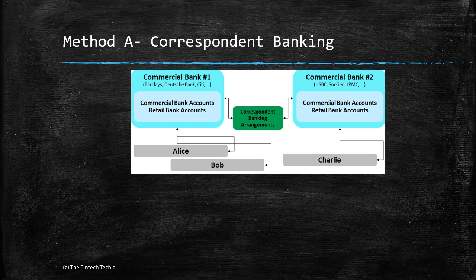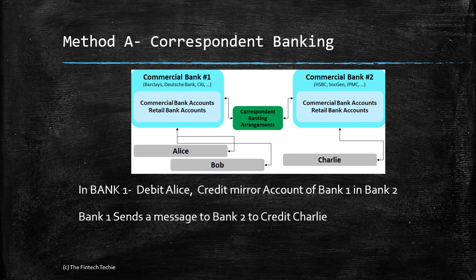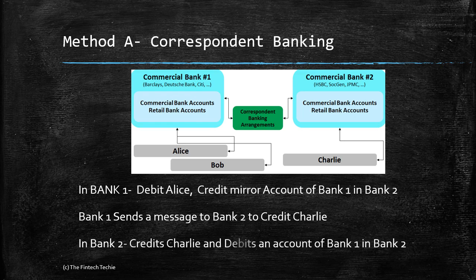In the correspondent banking method, Bank One debits Alice's account and credits a mirror or shadow account of Bank One held within Bank One, while Bank One also has a real account in Bank Two. Bank One then sends a message to Bank Two to credit Charlie. On receipt of the message, Bank Two credits Charlie's account and debits Bank One's account held in Bank Two — so Bank Two has no risk at all.